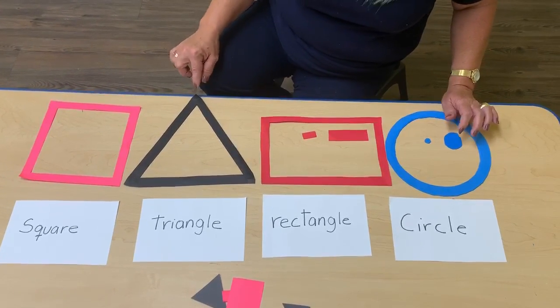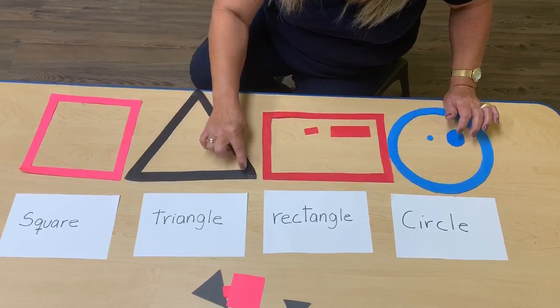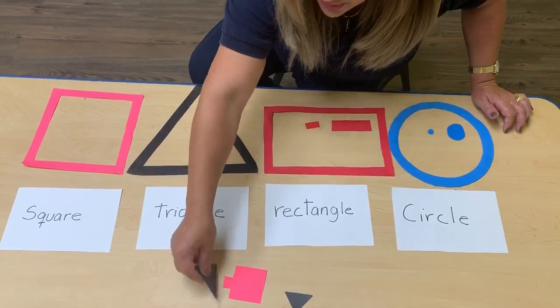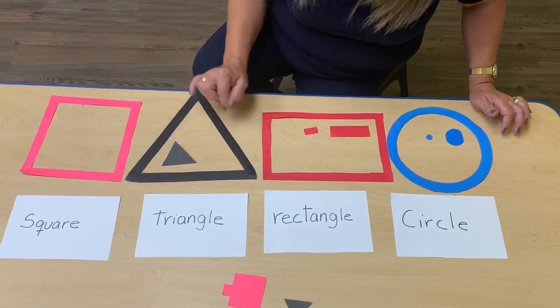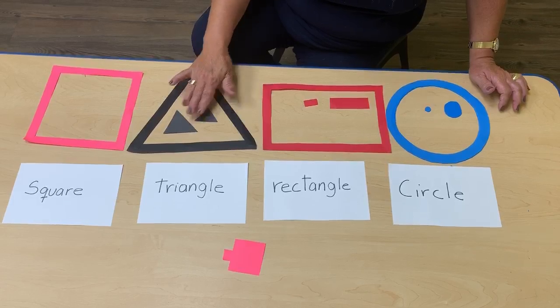Triangle has three points. One, two, three. Three points. Let me see where I can find this triangle. Here. It's big and little.